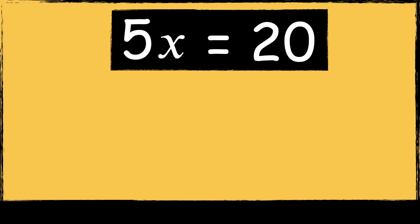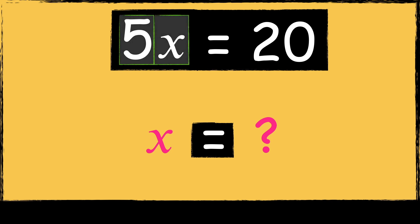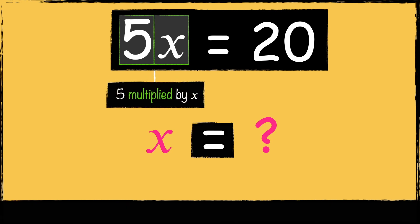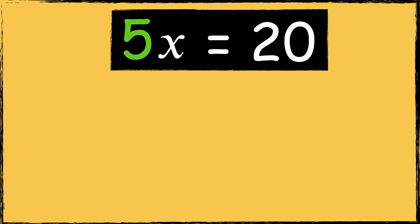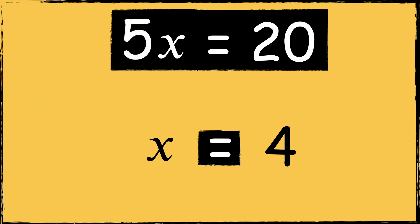Here's the next equation: 5X equals 20. To solve this equation we need to find the value of X. In algebra, when a number and letter are next to each other side by side, it implies multiplication, so 5X means 5 multiplied by X. First I can remove the coefficient term by dividing by 5, so now I'm left with X. Anything that we do to the left side we must also do to the right side, so we need to divide 20 by 5. 20 divided by 5 is 4, so the solution is X equals 4.